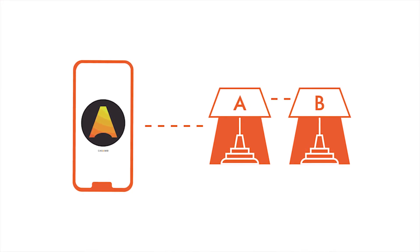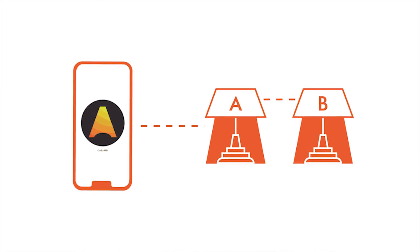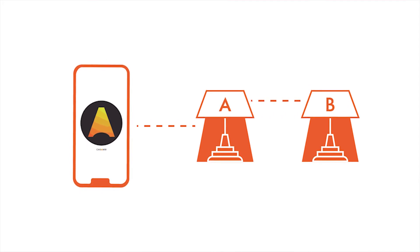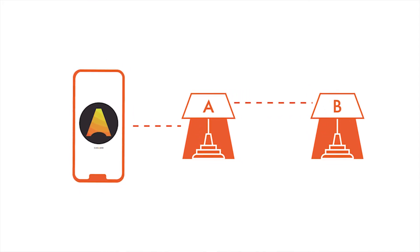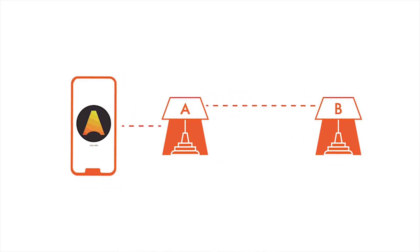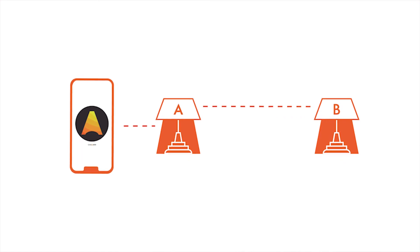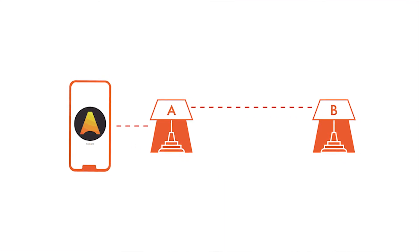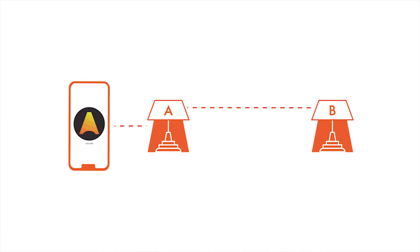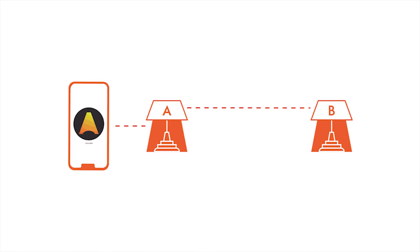Now start to move unit B away from unit A while keeping your mobile device near unit A. In the luminaires tab, tap the all luminaires icon repeatedly as you move unit B away. Both luminaire A and B will turn on and off. Unit B will eventually stop reacting when it's out of communication range.